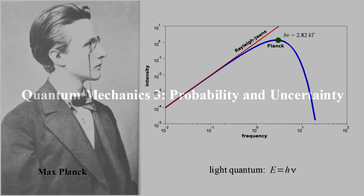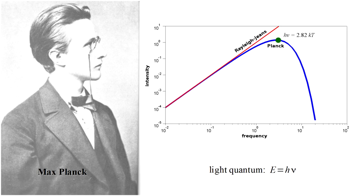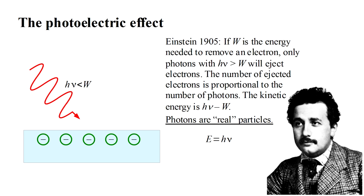Welcome to Quantum Mechanics 3, Probability and Uncertainty. In the first video we saw that in order to correctly describe thermal radiation's variation of intensity with frequency, Max Planck reluctantly proposed the radical idea that light energy comes in discrete chunks. At a frequency nu, the energy quantum is E equals Planck's constant h times nu. In the second video we presented Einstein's arguments that these quanta represented real particles of light, what we now call photons.